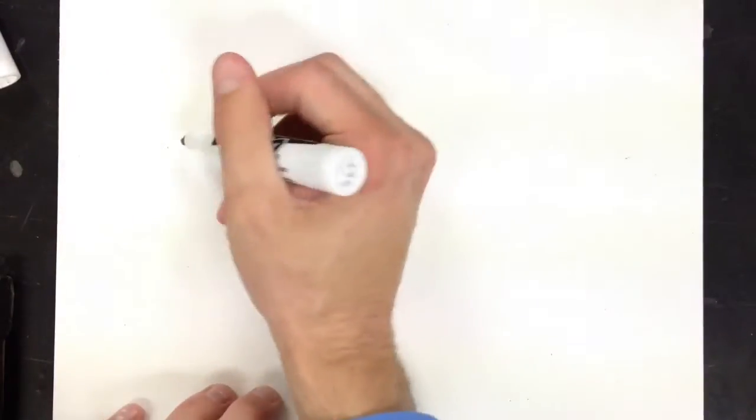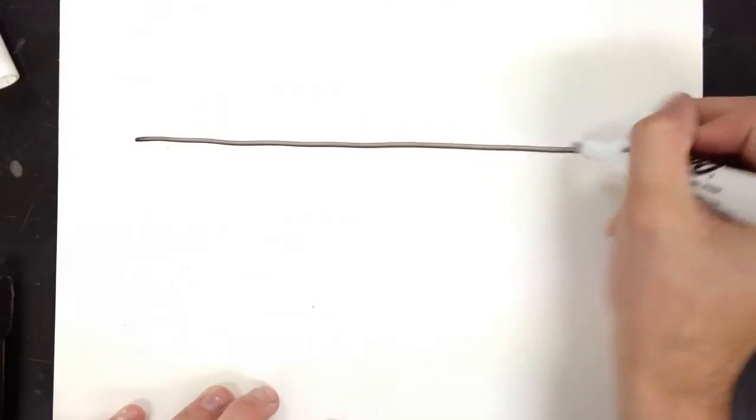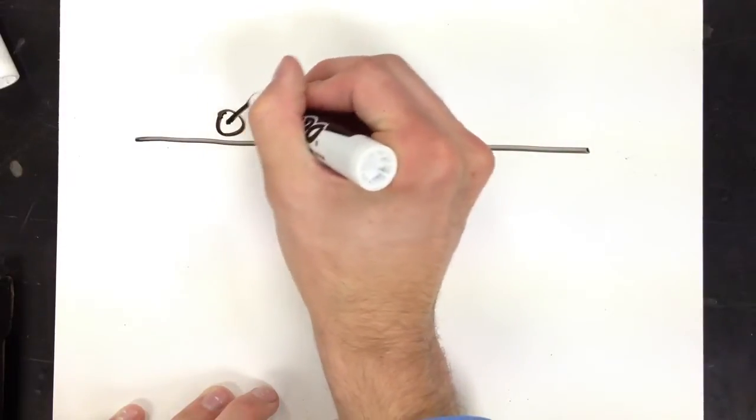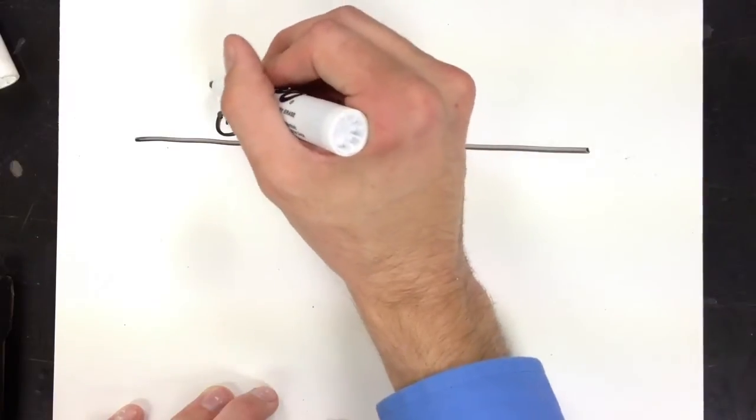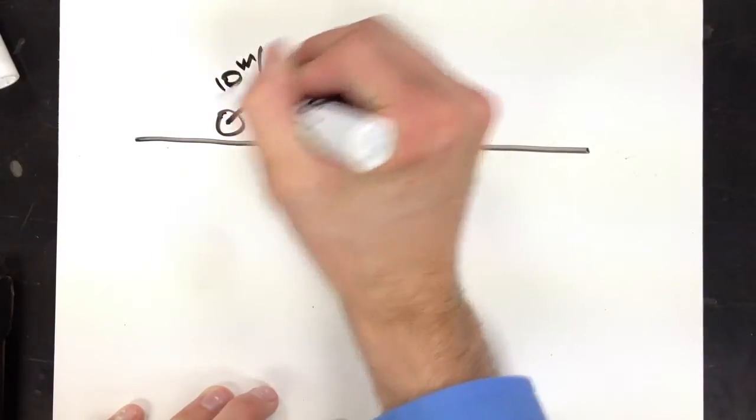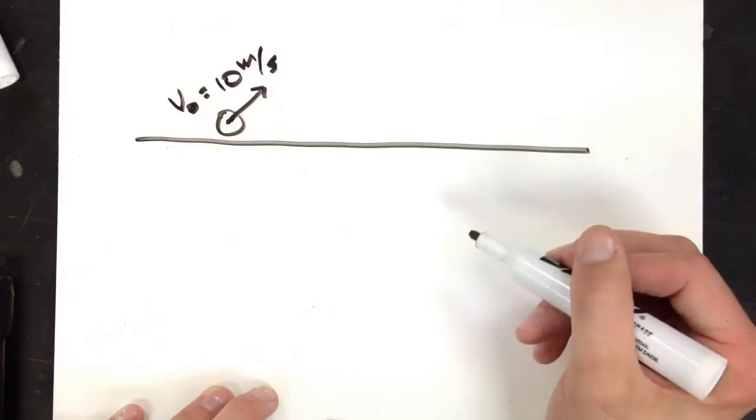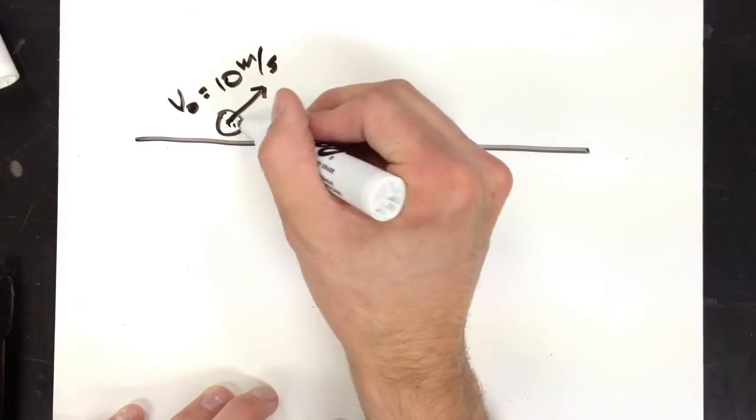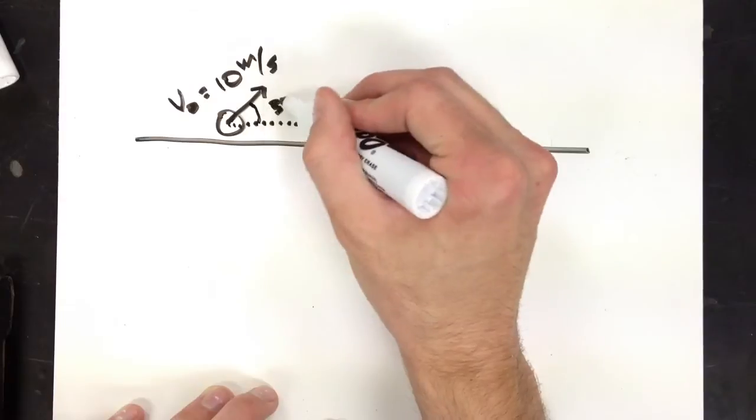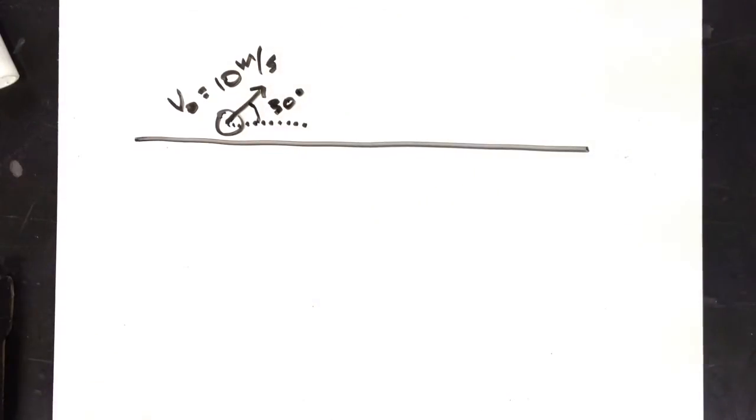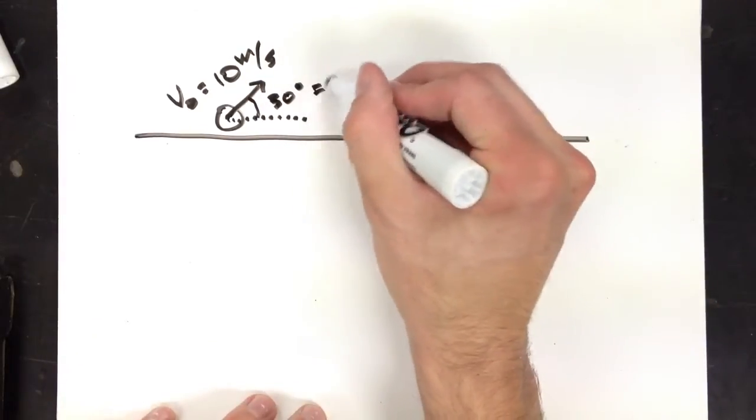So let's do an example problem, shall we? Let's say that I have a projectile that is fired at a velocity of, let's do 10 meters per second. That's my v0. And it's fired at an angle of 30 degrees. So 30 degrees is my theta.